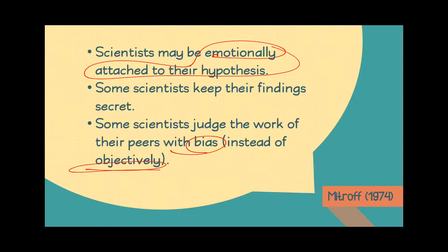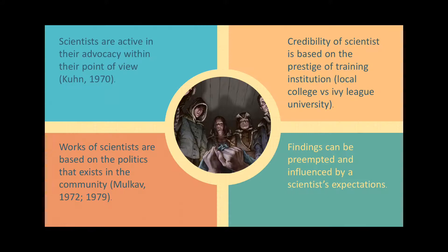Kuhn argues that scientists are very active in their own advocacies, which can be beneficial but can also be an epistemological binder. If your advocacy is problematic — imagine a scientist who is an 'all lives matter' advocate — he will redirect his studies to prove his point. Advocacies can be both beneficial and harmful to the general population. Works of scientists are also based on politics that exist within the community, as I gave an example of earlier.